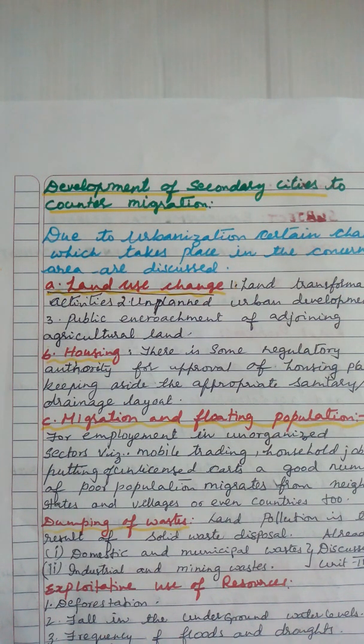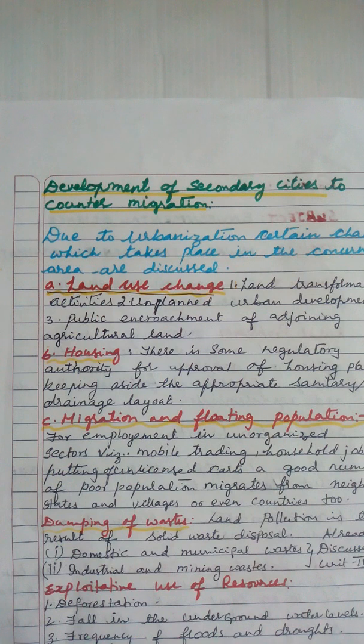Residential, commercial, and industrial institution zones — as we have learnt in zoning — are marked properly before construction by the town and country planning authority.